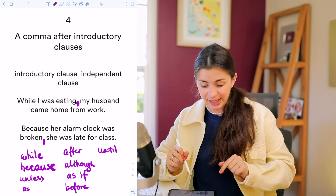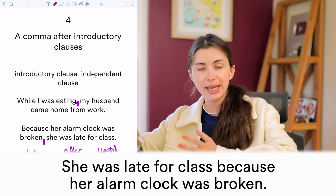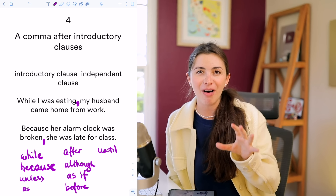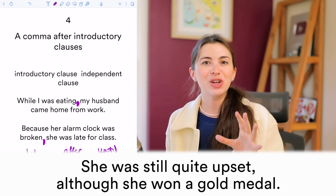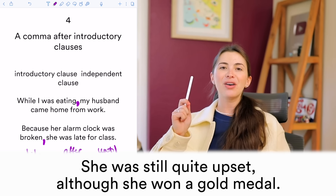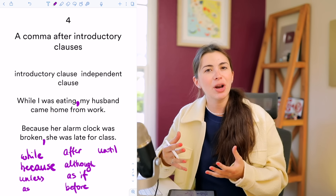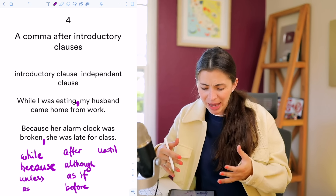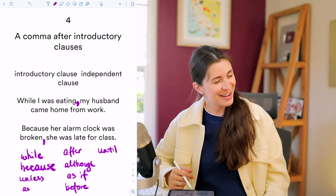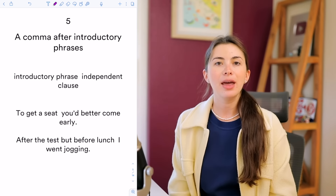One important exception: when the introductory clause comes at the end of the sentence, you don't need a comma. Example: 'My husband came home from work while I was eating' — no comma needed. Or: 'She was late for class because her alarm clock was broken' — no comma. The only exception to that rule is extreme contrast: 'She was still quite upset, although she won the gold medal.' Here we put a comma before 'although' to show the contrast.